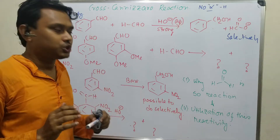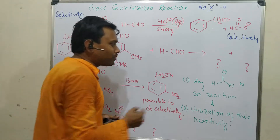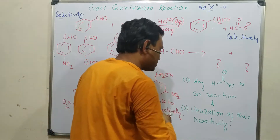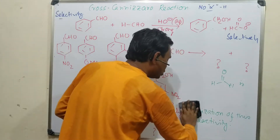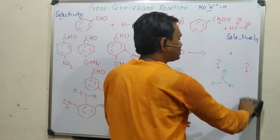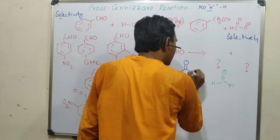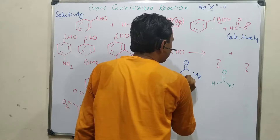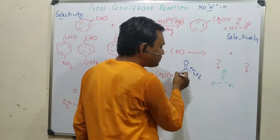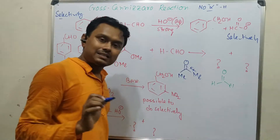Why is formaldehyde called a 'super aldehyde'? There are two reasons. First, formaldehyde's carbonyl carbon is attached only to hydrogen atoms, so the +I effect is not present — unlike ketones or acetaldehyde where alkyl groups provide a +I effect. Second, those other groups are relatively larger and bulkier, whereas hydrogen is small, making formaldehyde much less bulky.